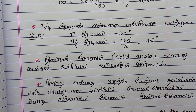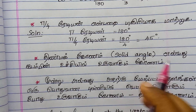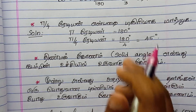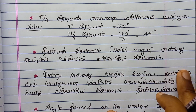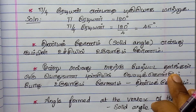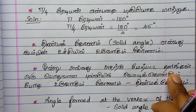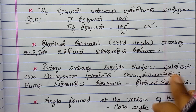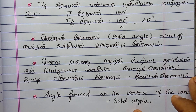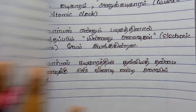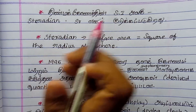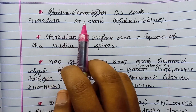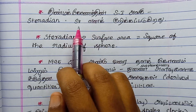Now we move to solid angle and plane angle. A solid angle is like a cone — a cone formed at a point in space. In a solid angle, we cut at a point of intersection using a thin cone. The solid angle is formed at the vertex of the cone. The plane angle unit is the Radian; the solid angle unit is the Steradian, abbreviated SR.